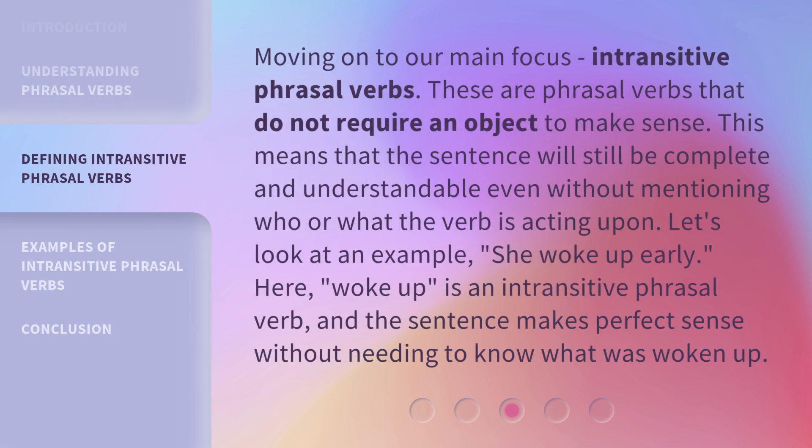Moving on to our main focus: intransitive phrasal verbs. These are phrasal verbs that do not require an object to make sense. This means that the sentence will still be complete and understandable even without mentioning who or what the verb is acting upon. Let's look at an example: "she woke up early." Here, "woke up" is an intransitive phrasal verb, and the sentence makes perfect sense without needing to know what was woken up.